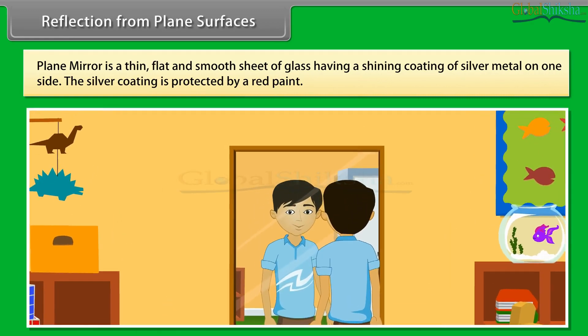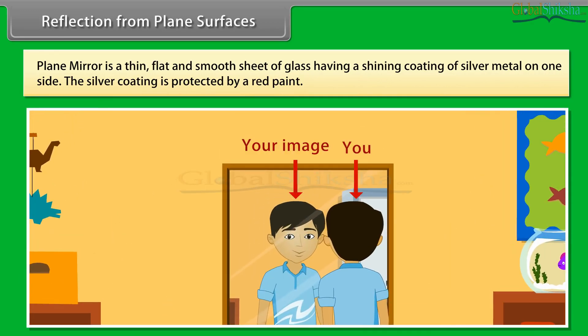Reflection from plane surfaces. Plane mirror is a thin, flat and smooth sheet of glass having a shining coating of silver metal on one side. The silver coating is protected by red paint.